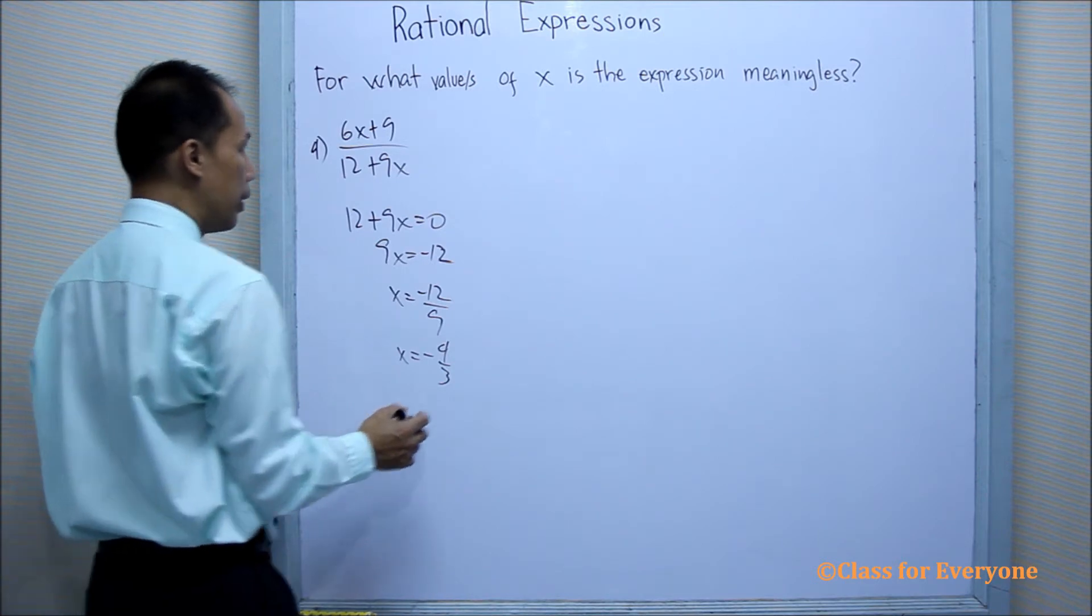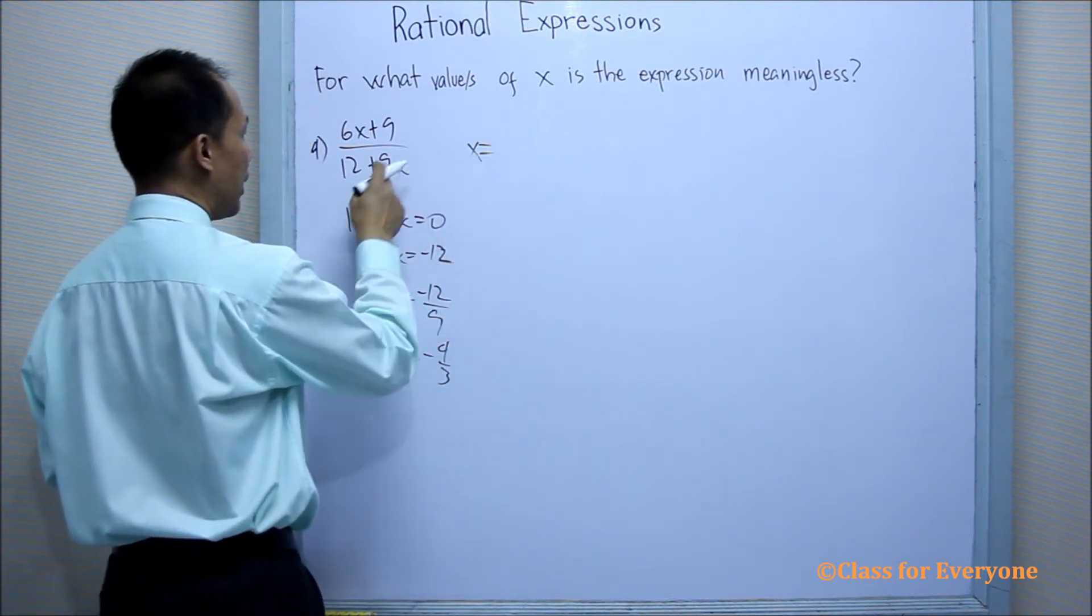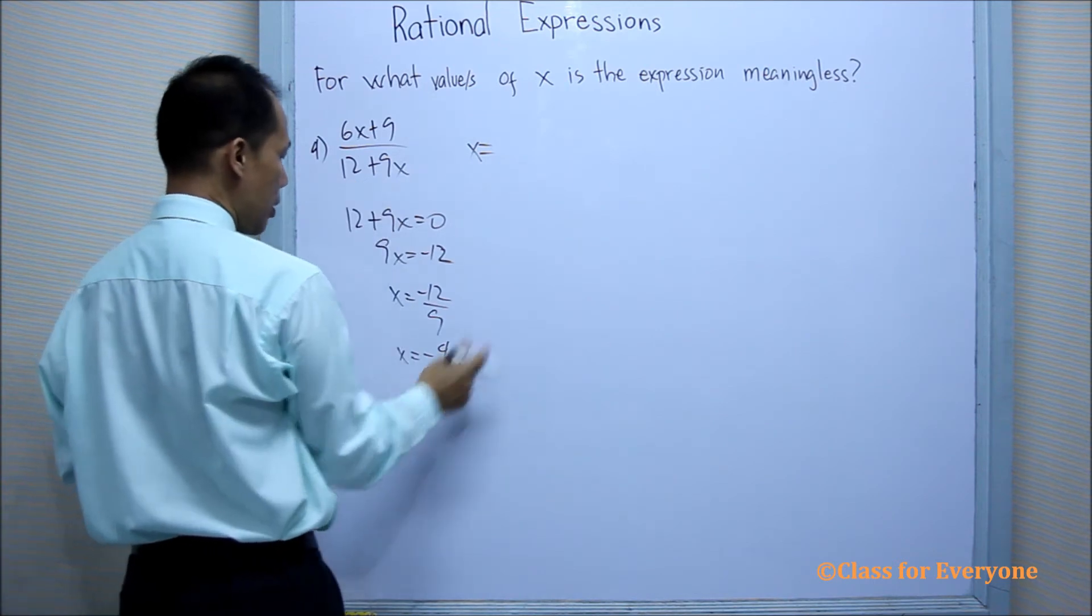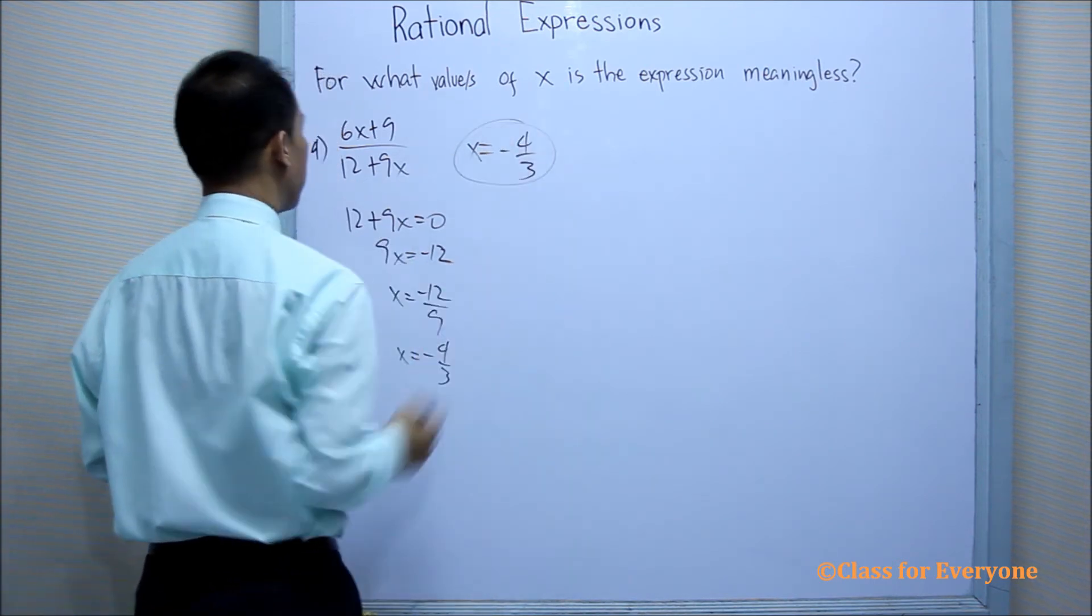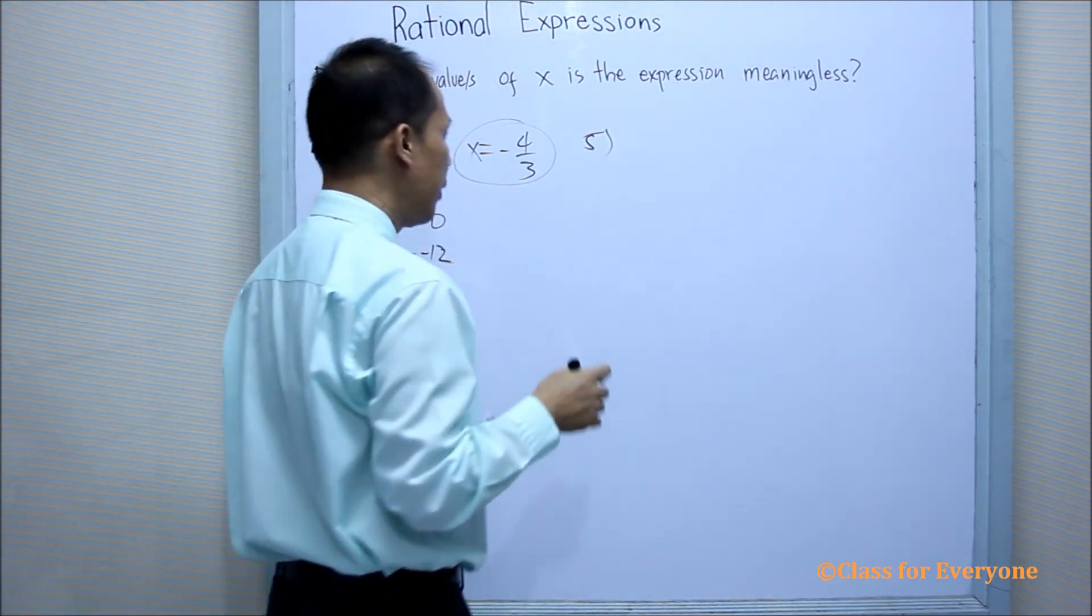Therefore, the value of x that will make this expression meaningless is negative 4 over 3. Another example: when we have a polynomial of 2y squared plus 3y all over 2y squared plus 5y plus 3.